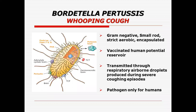So strictly aerobic, encapsulated, fimbriated microorganism, pathogenic only for humans, with a number of toxins. We are particularly concerned with the tracheal cytotoxins, filamentous hemagglutinin, and pertussis toxins. These are the three most important components of the pertussis organism that contribute towards the virulence.